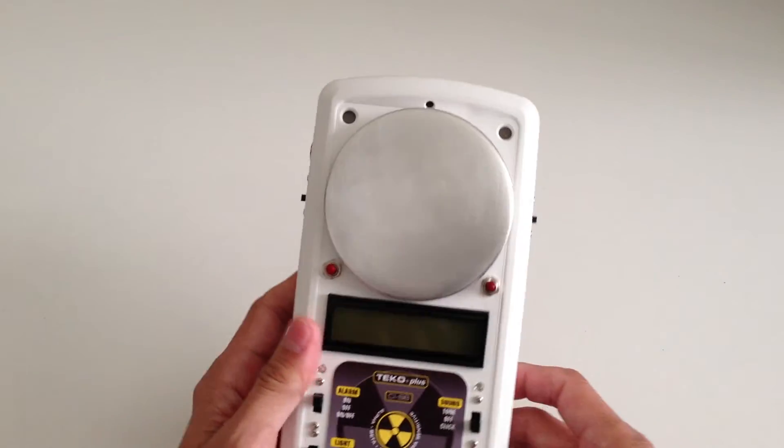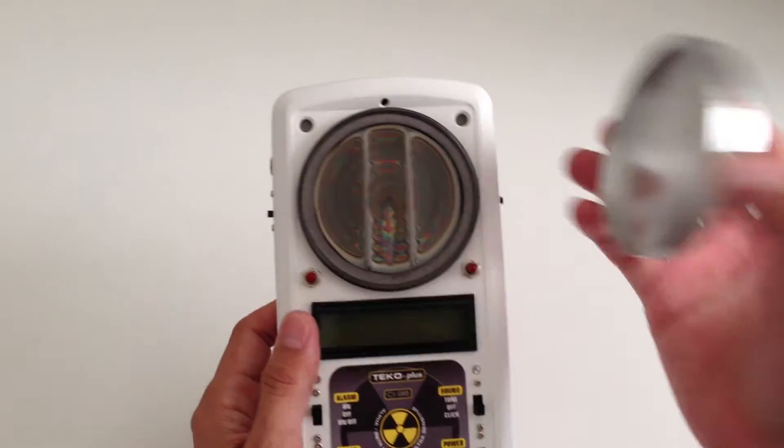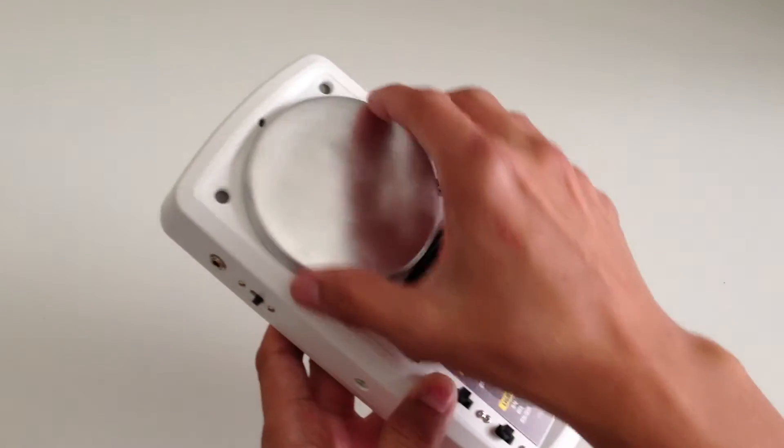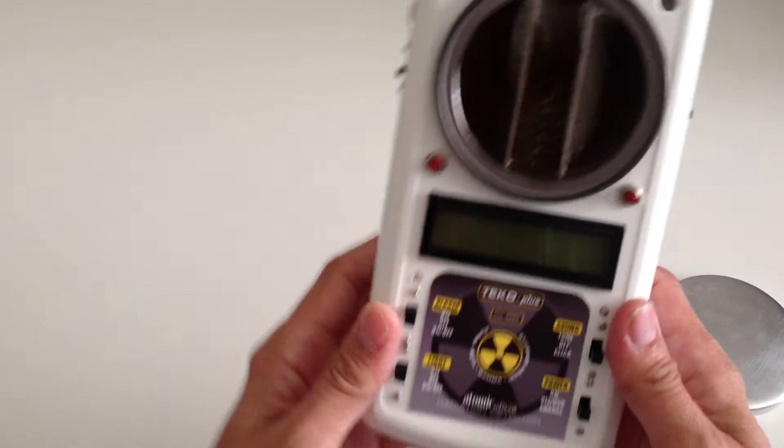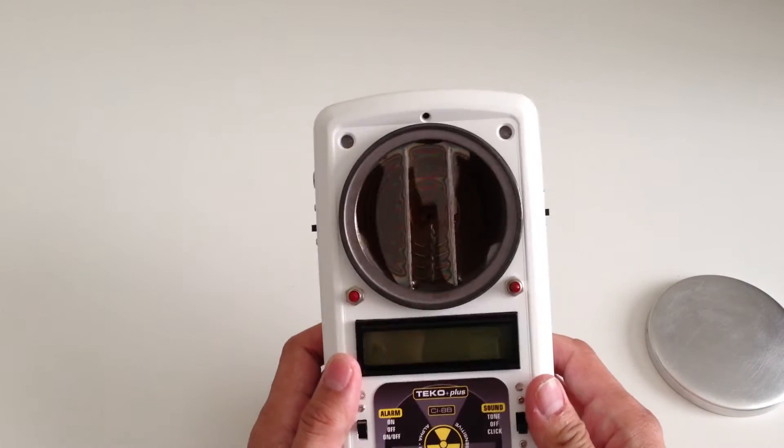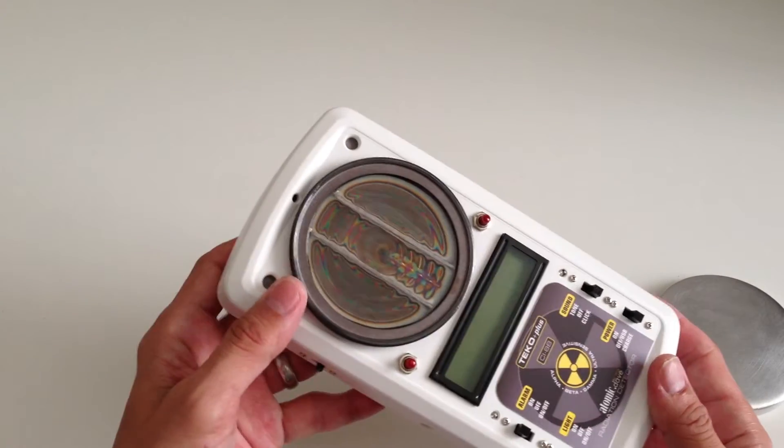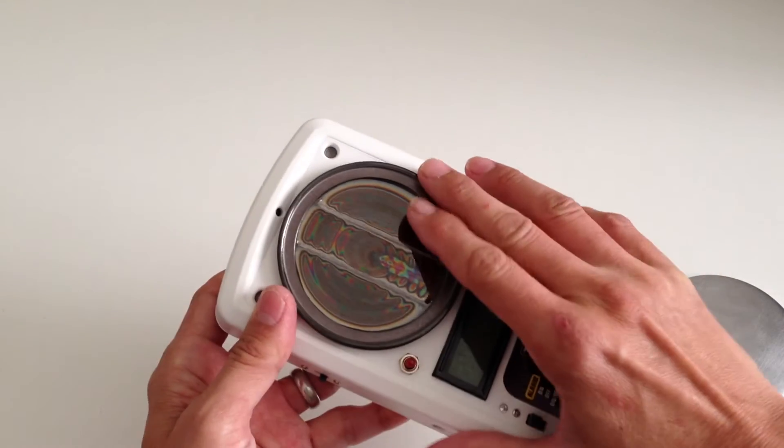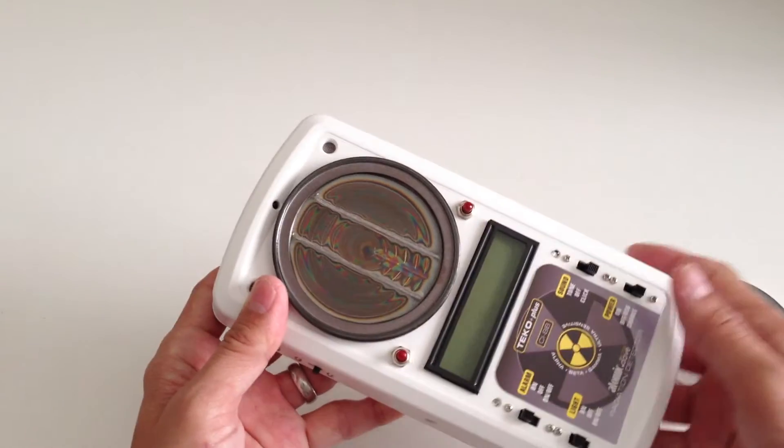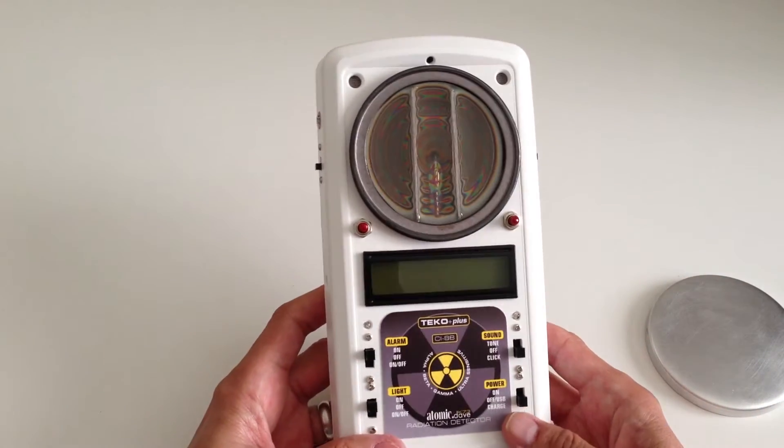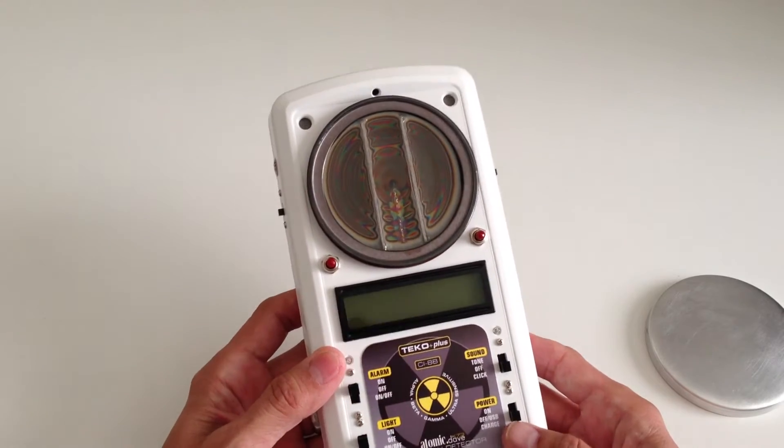It comes with an aluminum cap that covers and protects the mica window. So just look at this thing. This is 65 millimeters. I believe the L&D 7317 is 45 millimeters, so it's about another 20 millimeters bigger in diameter. So this thing is really sensitive. So I just want to show you what it can do.